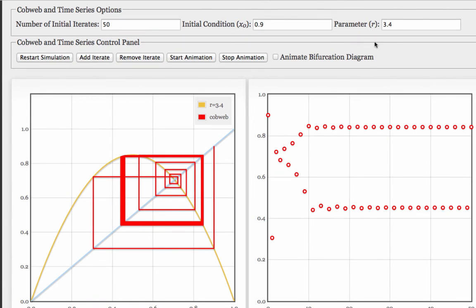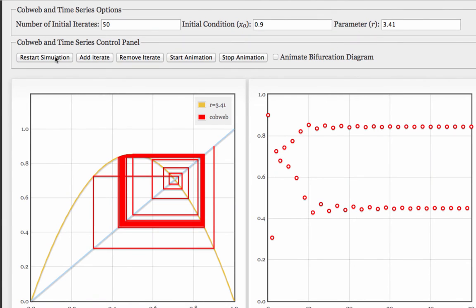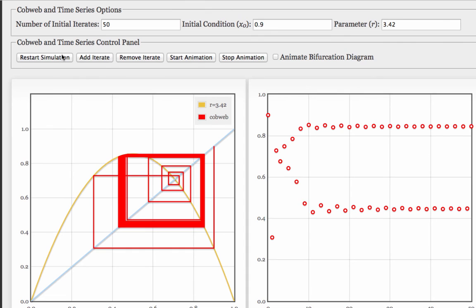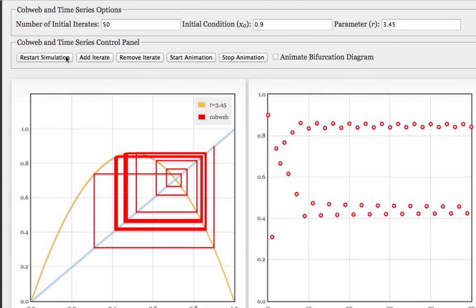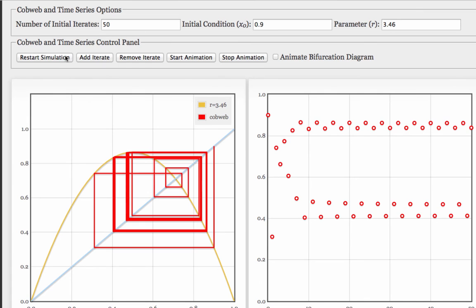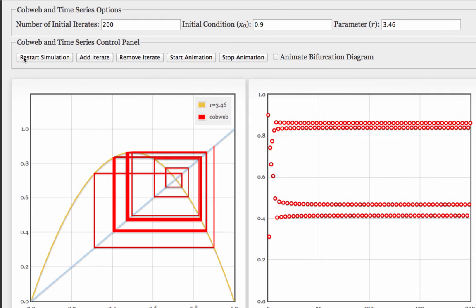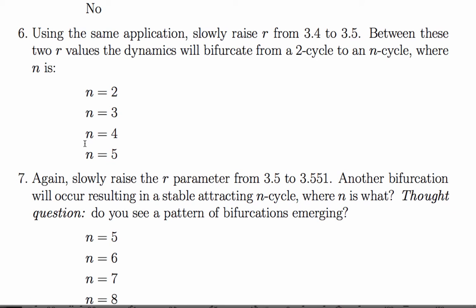As we raise r slowly from 3.4 to 3.41 to 3.42 to 3.43, 3.44 to 3.45, you're starting to see another bifurcation. At 3.46 it's pretty clear. Let's plot a few more points. Looks like a 4-cycle to me. So the answer is 4.